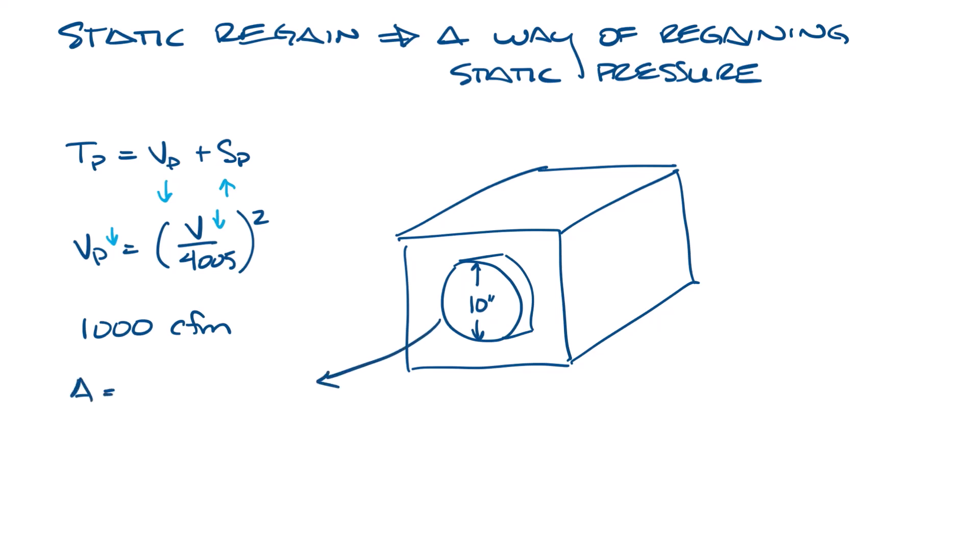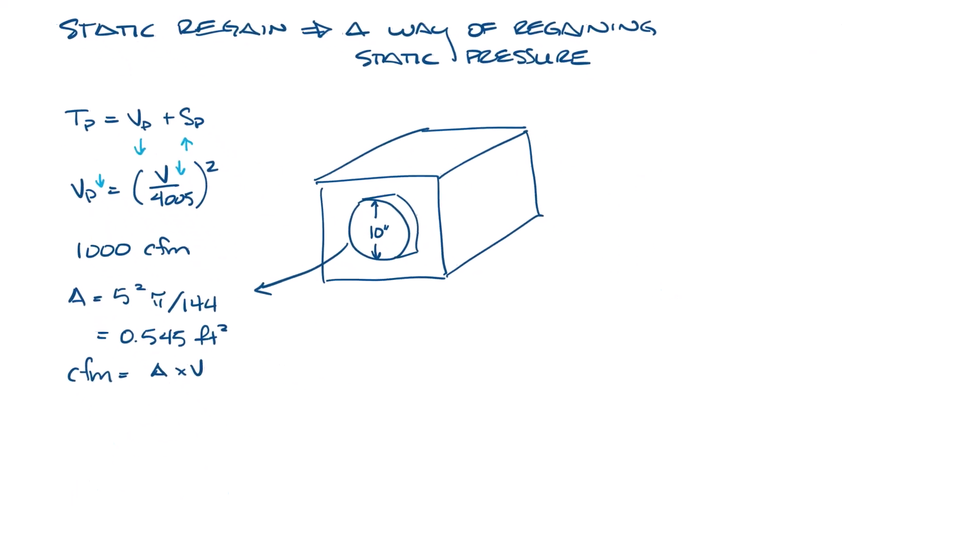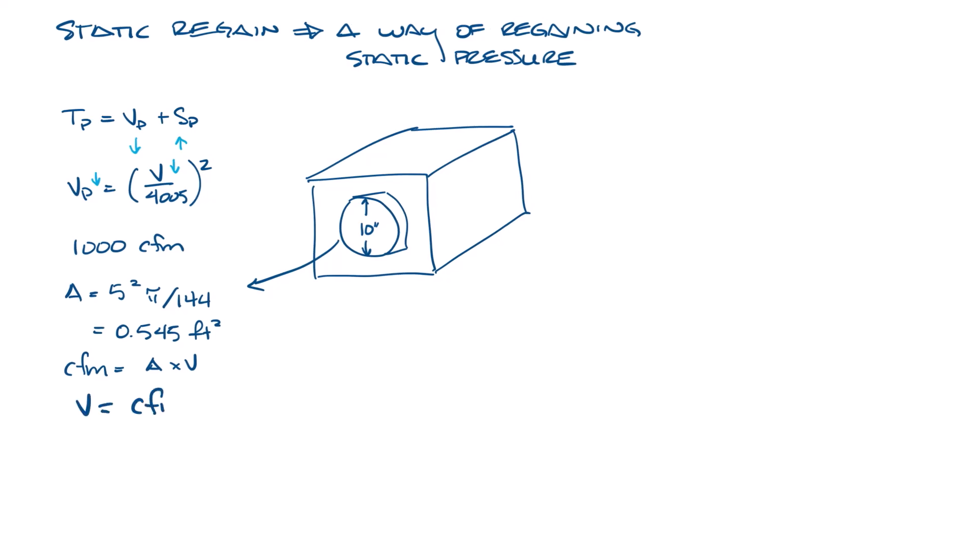So if you look at the area, the area is pi r squared divided by 144 to get it into feet, which is 0.545 square feet. And CFM equals area times velocity. So velocity equals CFM divided by area. We take our thousand CFM divided by 0.545 and that comes to about 1,835 feet per minute. So now we can calculate the velocity pressure, which is equal to 1835 divided by 4,005 squared and that comes to 0.21 inches.